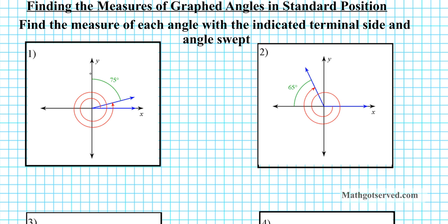Let's take a look at question number one. This is the initial side on zero degrees on the positive x-axis, and this is the terminal side right here. The angle swept is indicated by the red spiral. We have one complete rotation and another complete rotation with another angle left over.